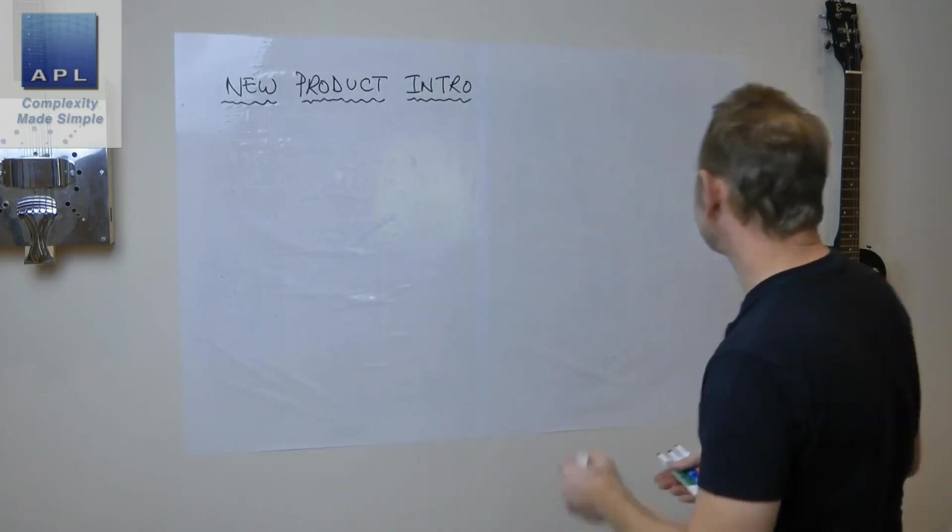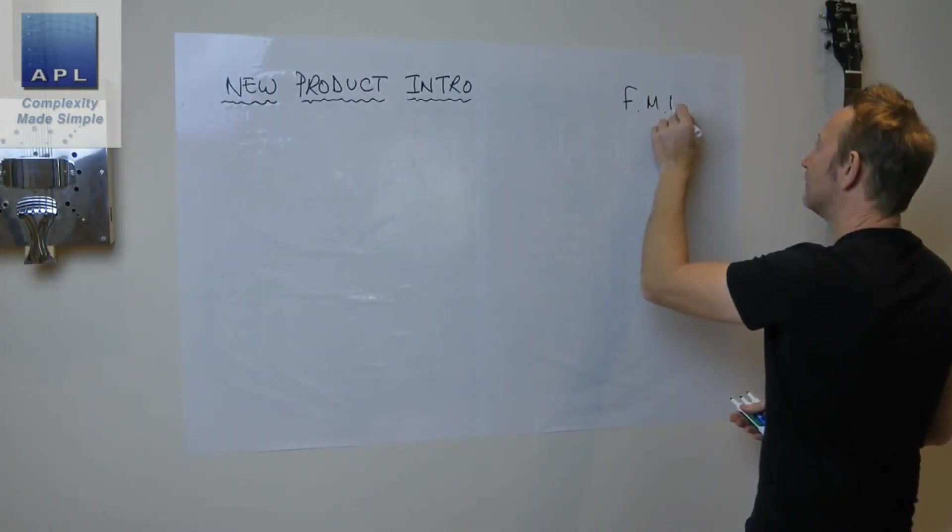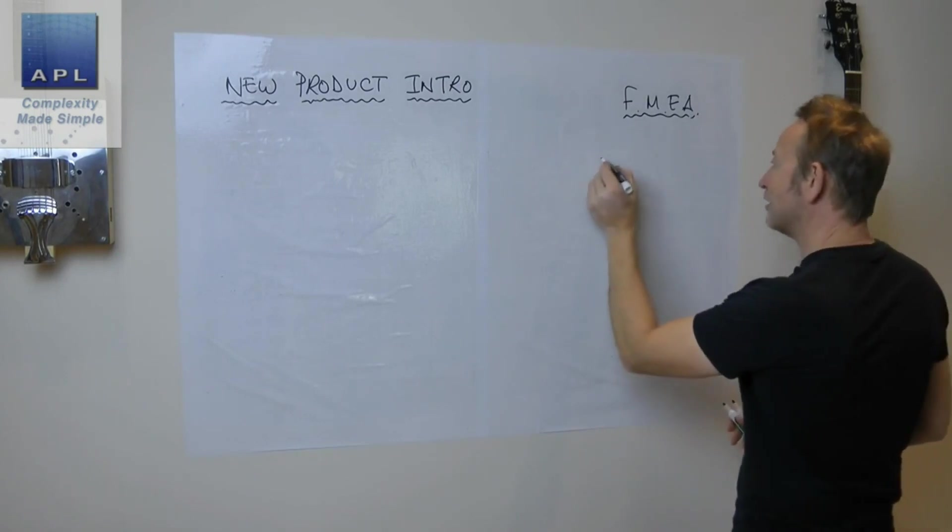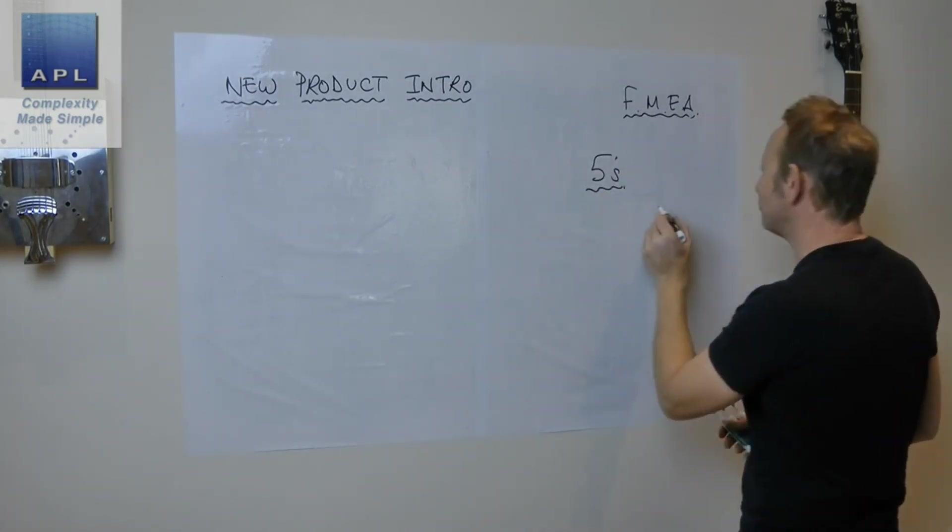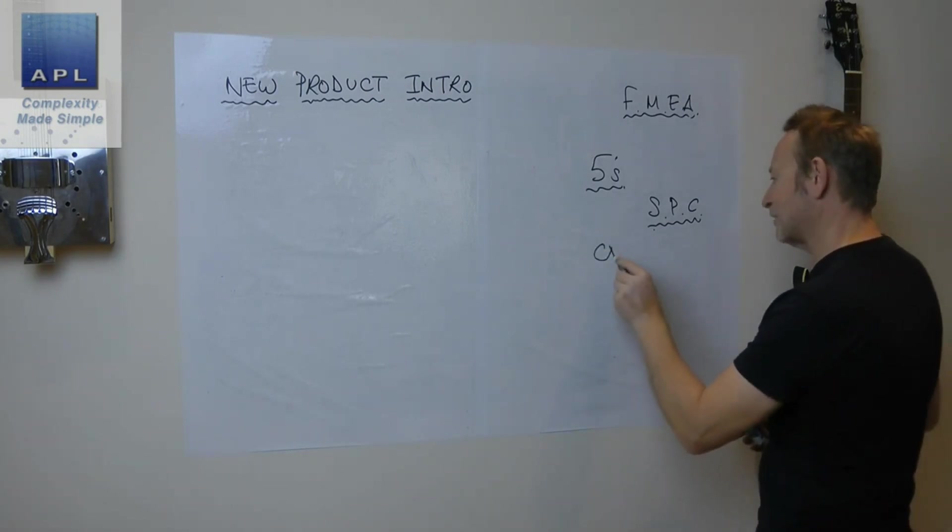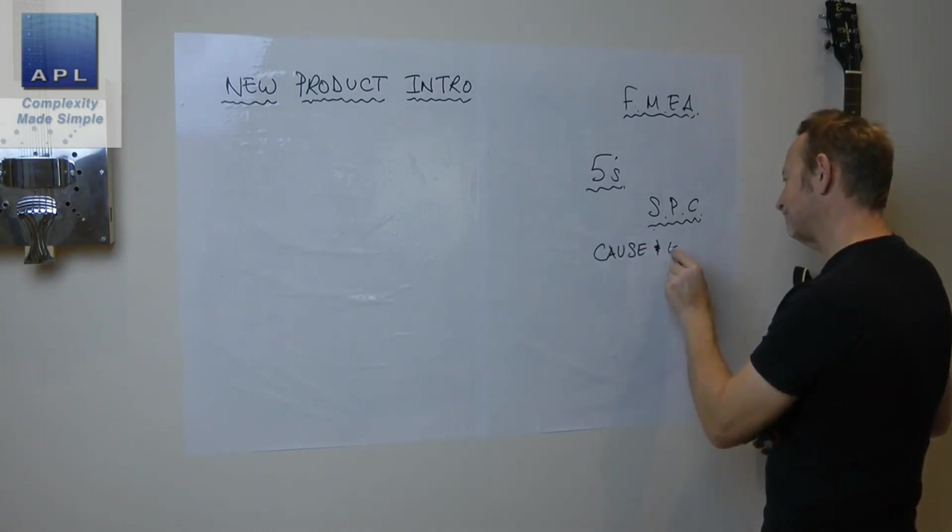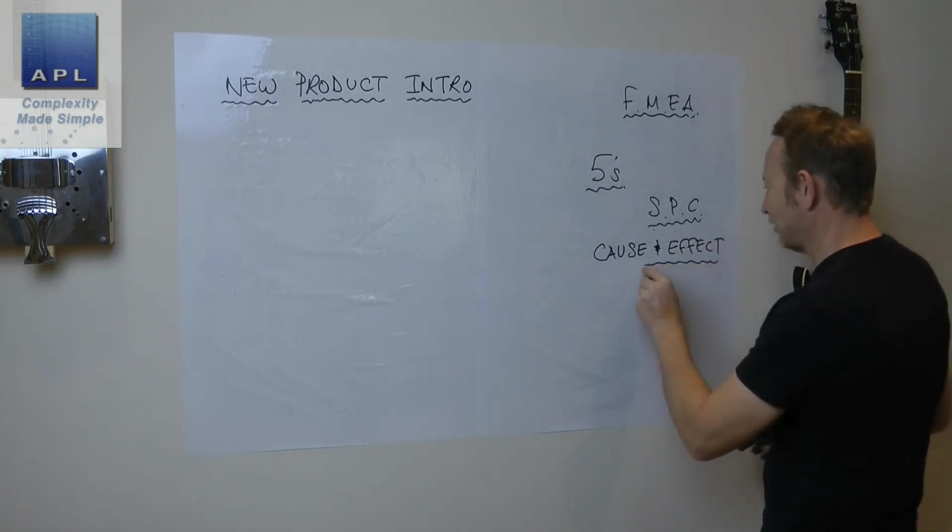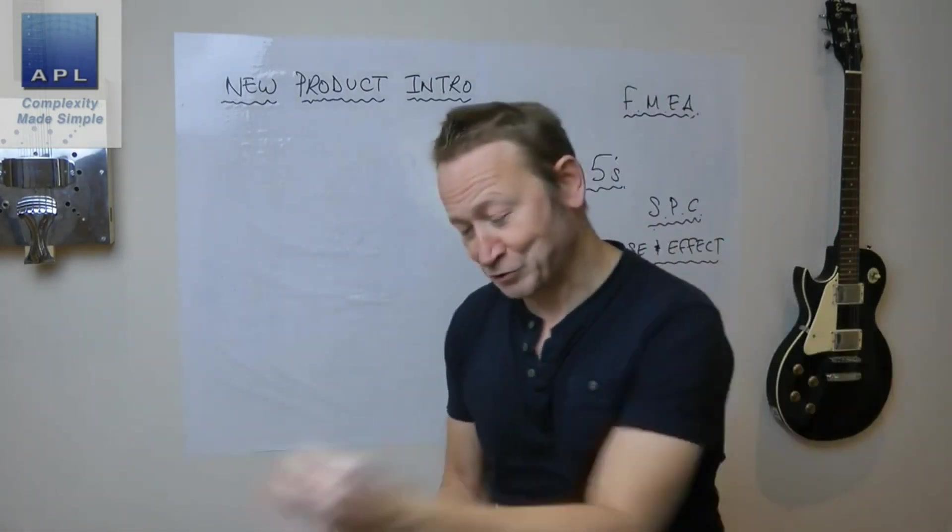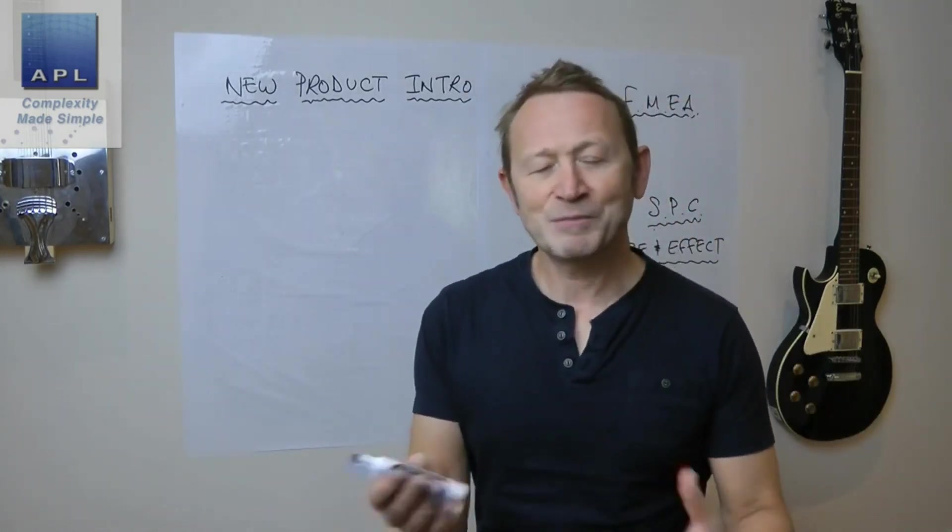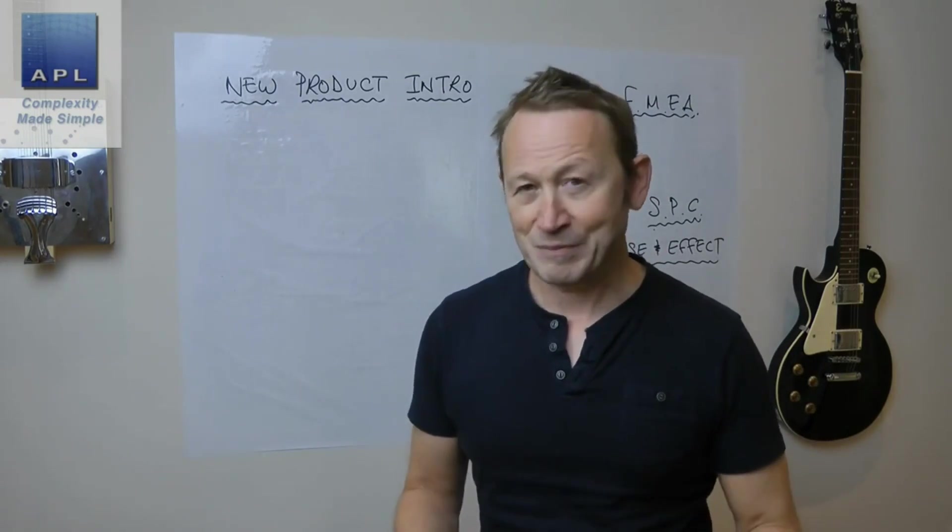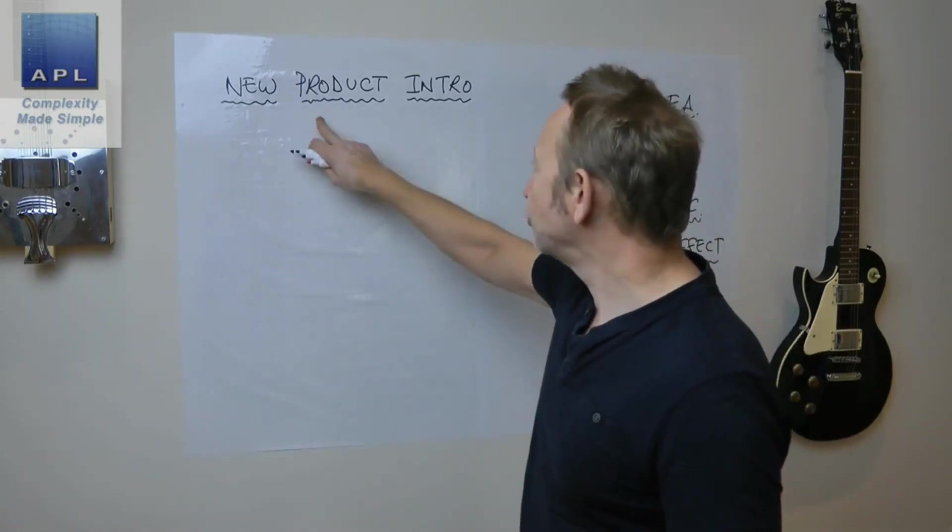Before I went and got trained as a Six Sigma black belt, I'd learned various tools in my career. I'd been on an FMEA course, never used it. I'd learned about 5S, didn't really use it. I'd learned about SPC, didn't really use it. Cause and effect fishbone diagrams, didn't really use them. One of the reasons was I just learned them as individual tools. To be quite honest, when you just learn one set of tools like that, they're going to have a very limited impact.